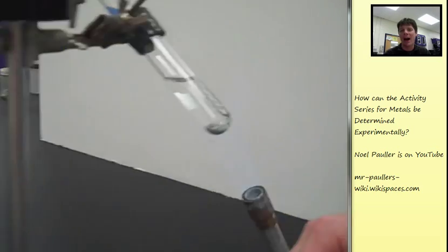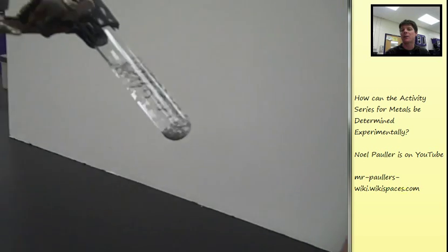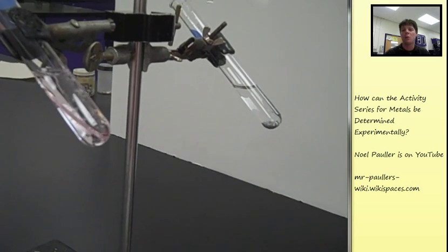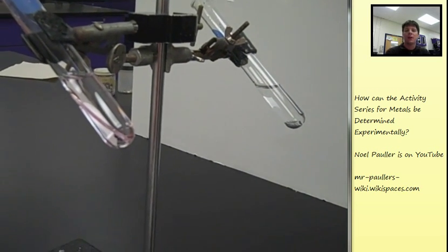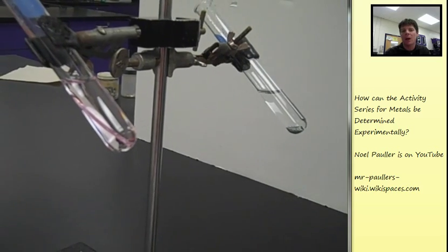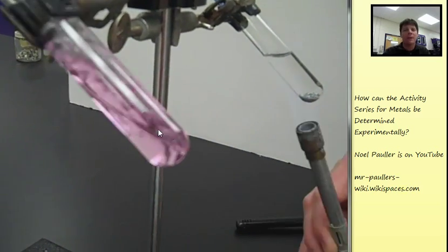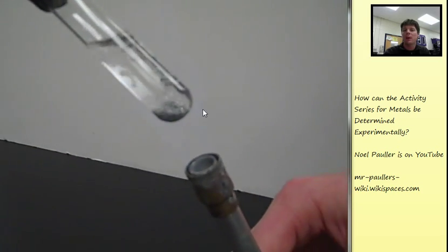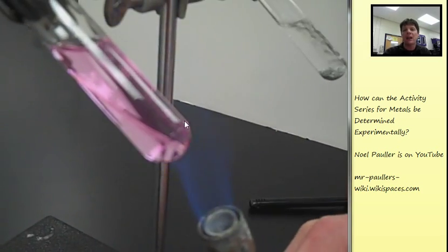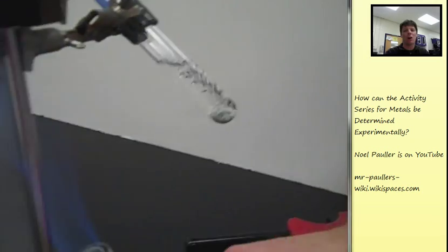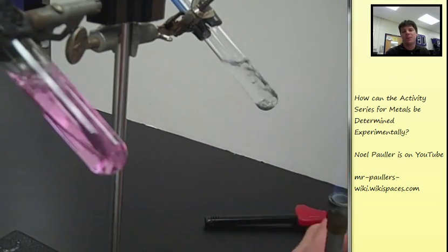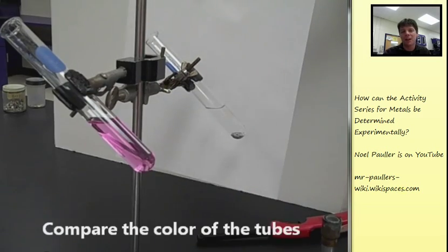The one that reacts is going to have a higher activity. The one that doesn't react is going to have the lower activity of the two metals that are left. With continued heating, we're starting to see more and more color change in this tube that contained the sample of magnesium. The tube that contained the sample of zinc really isn't changing at all.